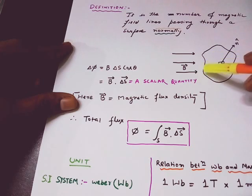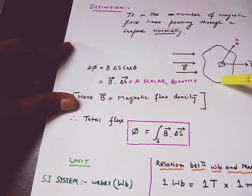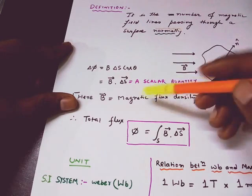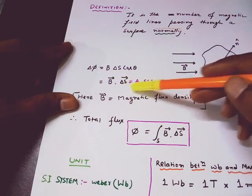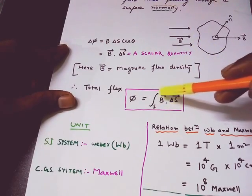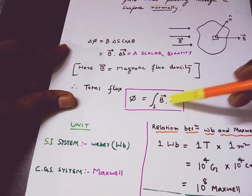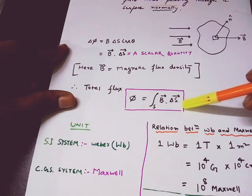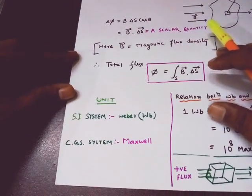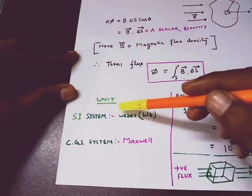So to find out the total outward flux through a surface, I will have to take the integral of this expression B dot dS. So the expression will be: the surface integral of B dot dS.